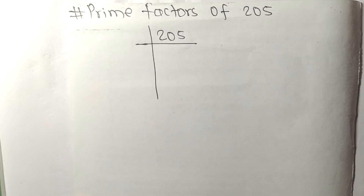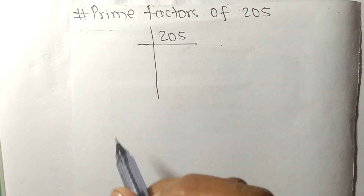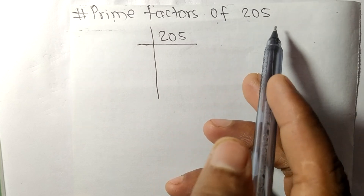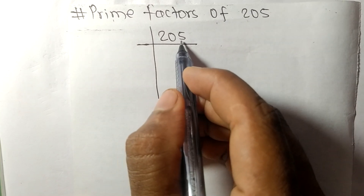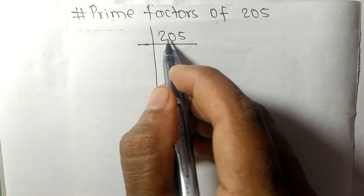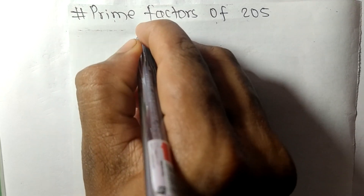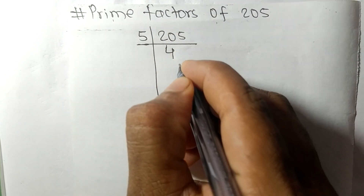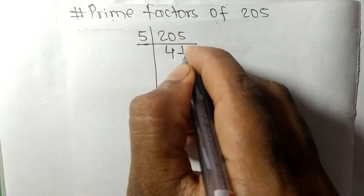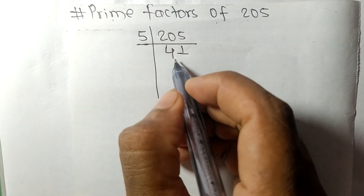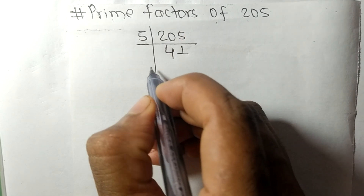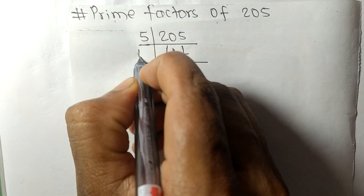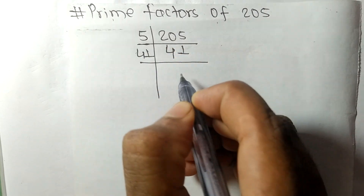Today we shall learn to find the prime factors of 205. Since 5 is at the last digit, this whole number is divisible by 5. 5 times 40 is 20 and 5 times 1 is 5, giving us 41, which is a prime number — divisible only by 41 itself.